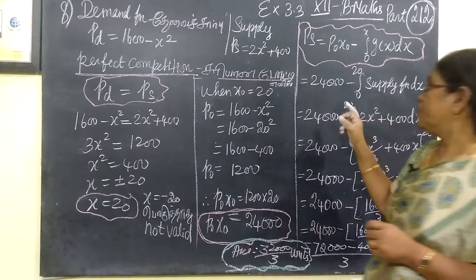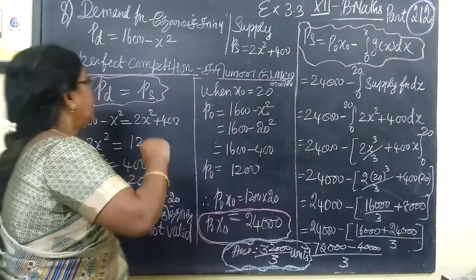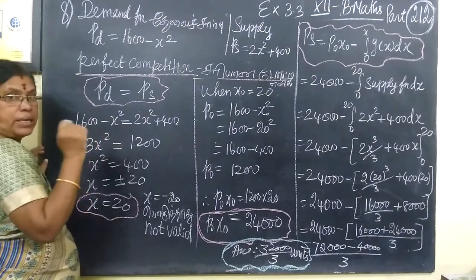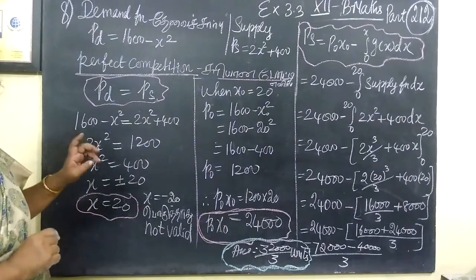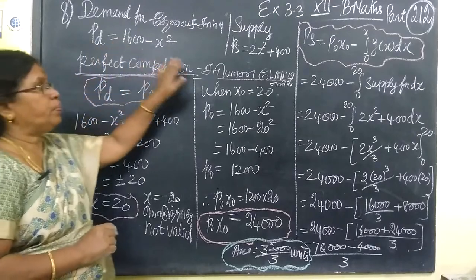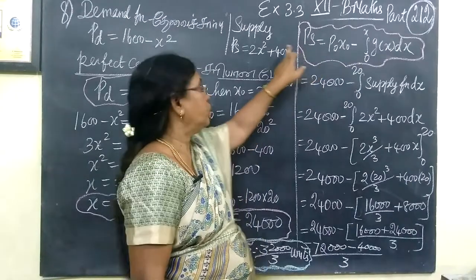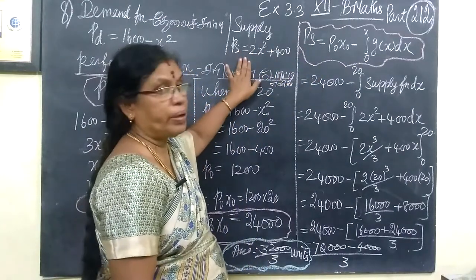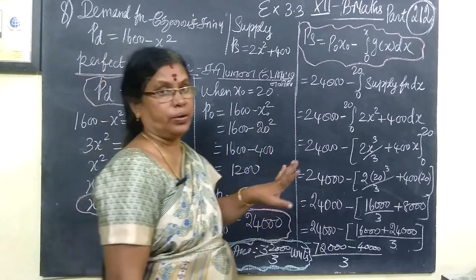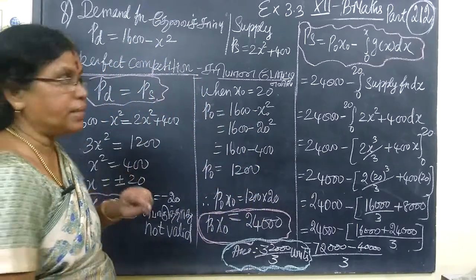Considering the calculation, consumer surplus and total surplus are determined. This is the supply concern — the second part of the differentiated problem. Again, consumer surplus, T.S., and the surplus appearance are computed from the demand and supply functions.